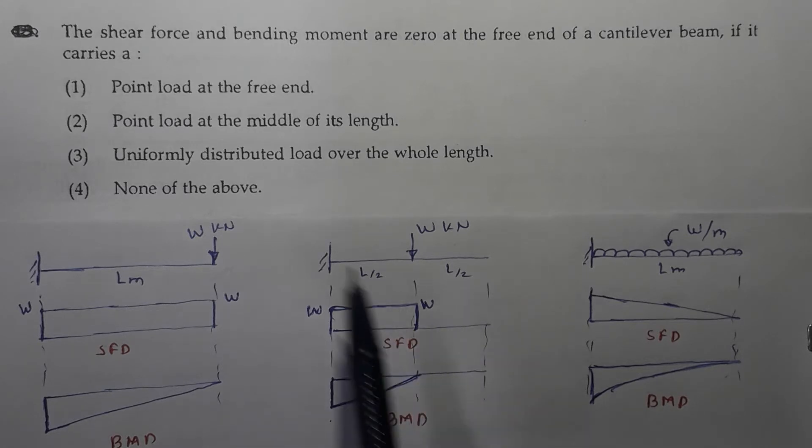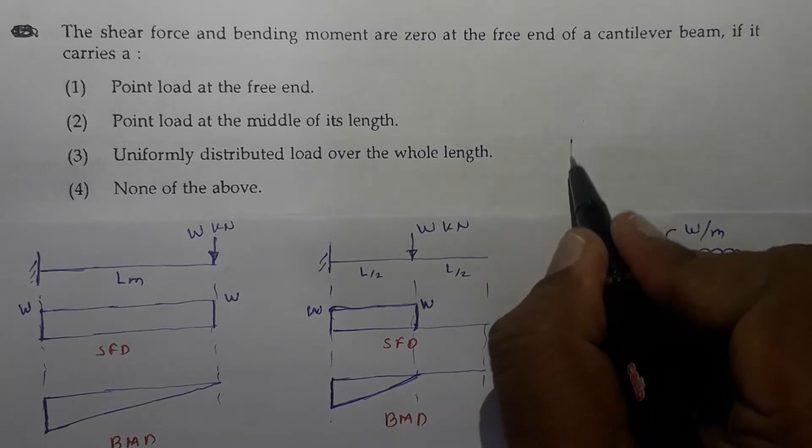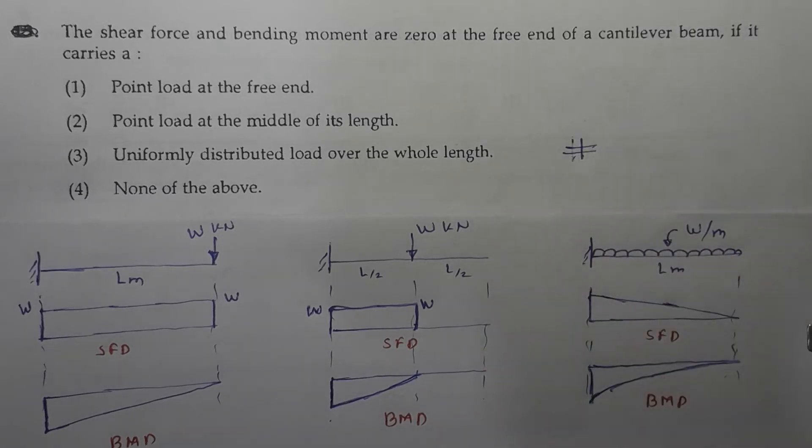So they have said that the shear force and bending moment are zero. We can see that shear force is zero over here, zero over here, zero over here. So shear force is zero at the free end. Bending moment is also zero at the free end. And in all these three cases, shear force and bending moment is zero. And that is why the given question is wrong. And in the answer key for this question, MPSC has given a hash, means no option is matching to this question.